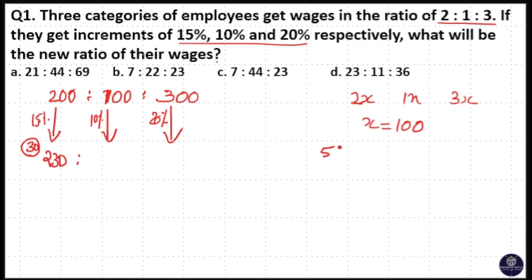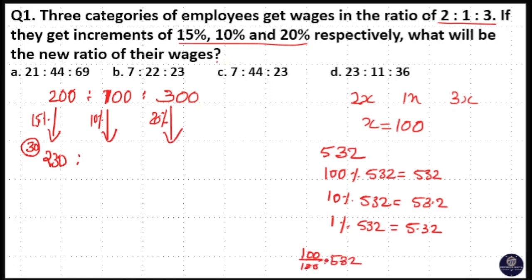This is number 532. Here 100 percentage of 532 is 532, and 10 percentage of 532 is 53.2. 1 percentage of 532 is 5.32. How to calculate it? 100 percentage means 100 by 100 of 532 is 532. 10 percentage means 10 by 100 into 532, that is 53.2.